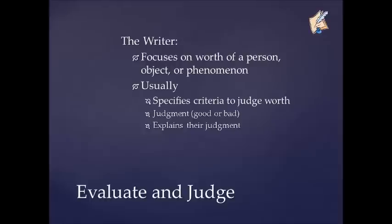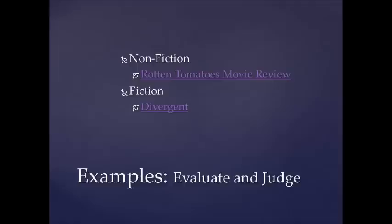The last E: Evaluate and Judge. When authors evaluate and judge, they focus on the worth of a person, object, or phenomenon. They usually specify criteria to judge their worth, tell you whether they think the item is good or bad, and then explain or justify their judgment using the criteria they set forth. For example, the non-fiction site Rotten Tomatoes, which provides movie reviews, uses this exact formula, as does the book Divergent when speaking about society.